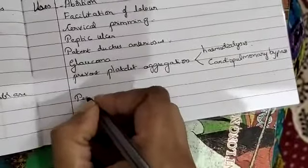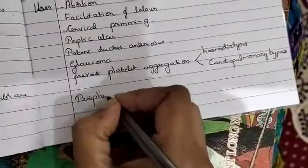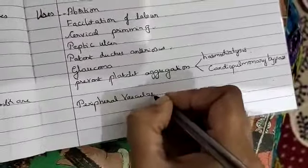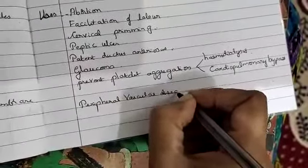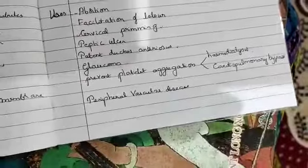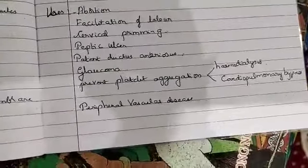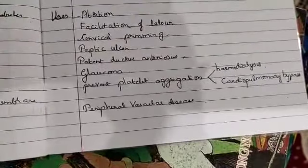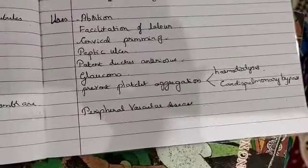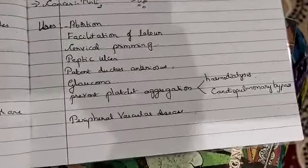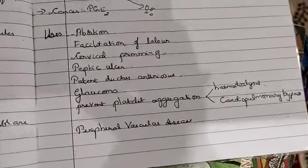The next use is it is used in peripheral vascular disease. Normally PGI-2 and PGE-2 is given by IV route because they bring about vasodilation, so they are used to relieve the pain.